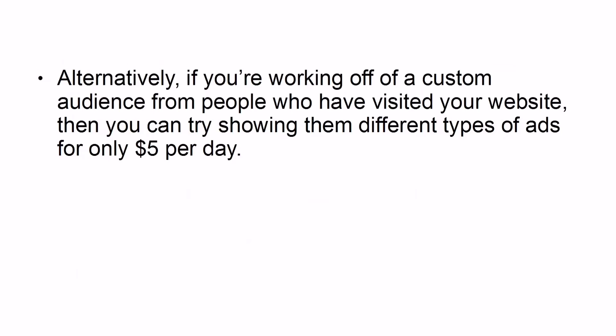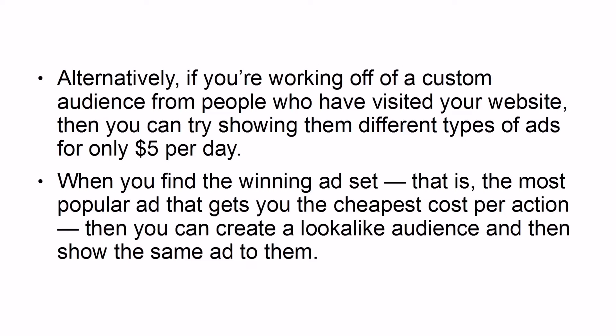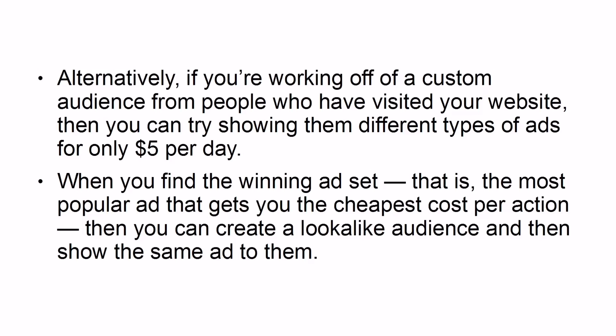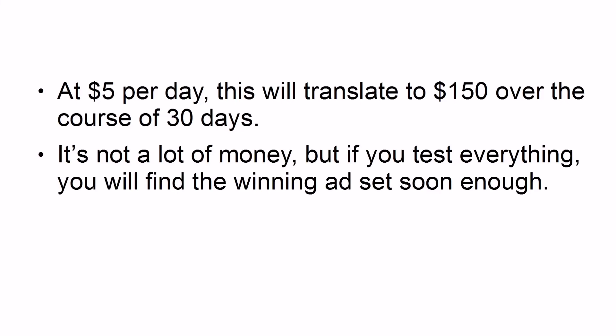Alternatively, if you're working off a custom audience from people who have visited your website, you can try showing them different types of ads for only $5 per day. When you find the winning ad set — that is, the most popular ad that gets you the cheapest cost per action — you can create a lookalike audience and show the same ad to them. At $5 per day, this will translate to $150 over the course of 30 days. It's not a lot of money, but if you test everything, you will find the winning ad set soon enough.